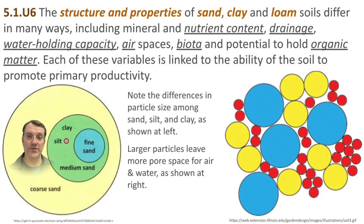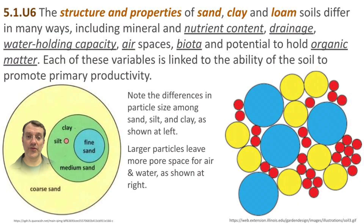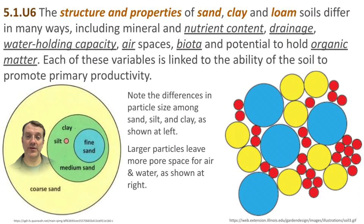The size differences in these particles are significant because they determine how closely they fit together. Coarse sand leaves a lot of gaps between particles, whereas clay particles are so small they fit very tightly together and leave very little pore space. That pore space is critically important to the structure of soils because it's where the water and the air exist.